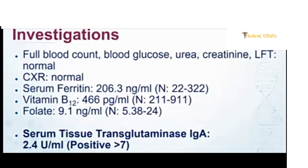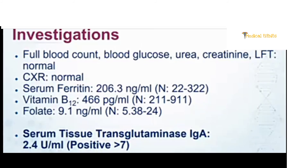Routine investigations, X-ray, ferritin, and vitamin B12 were normal. Given diarrhea alongside ataxia, a serum tissue transglutaminase IgA was checked and was also normal. This patient had insidiously progressive cerebellar ataxia for four years and chronic diarrhea for one year, so we proceeded with further investigation.